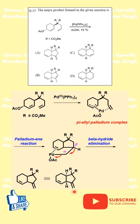This defines the position of the final alkene. The product formed matches option A. The other options violate pi-allyl symmetry or beta-hydride geometry.